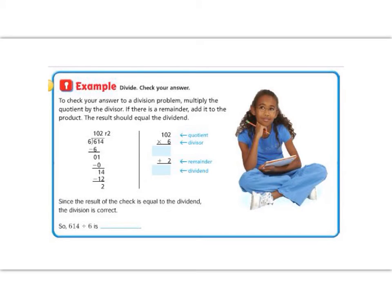Let's practice division one more time. To check our answer, we can multiply the quotient and the divisor. If there's a remainder, then we add it to the product. The result should be equal to the dividend. In this problem, we have 614 divided by 6. 6 goes into 6 one time. I subtract, I'm left with 0, bring down the 1. Now 6 doesn't go into 1, so I add a 0 up at the top. It goes in 0 times. Subtract, still left with 1. Bring down the 4. 6 goes into 14 two times, which is 12, remainder 2. So I get the answer 102, remainder 2.